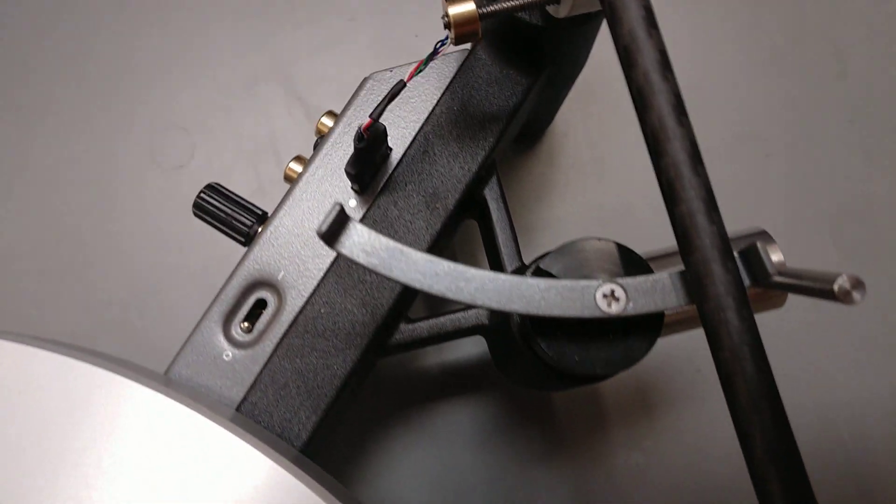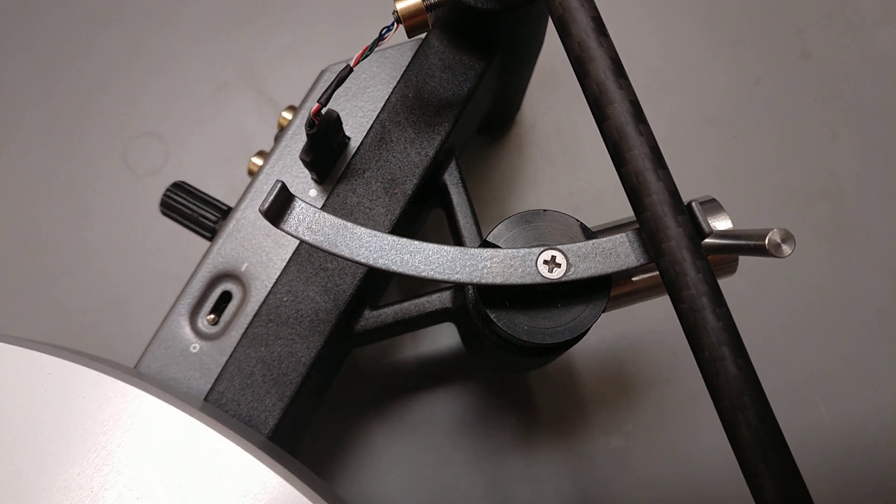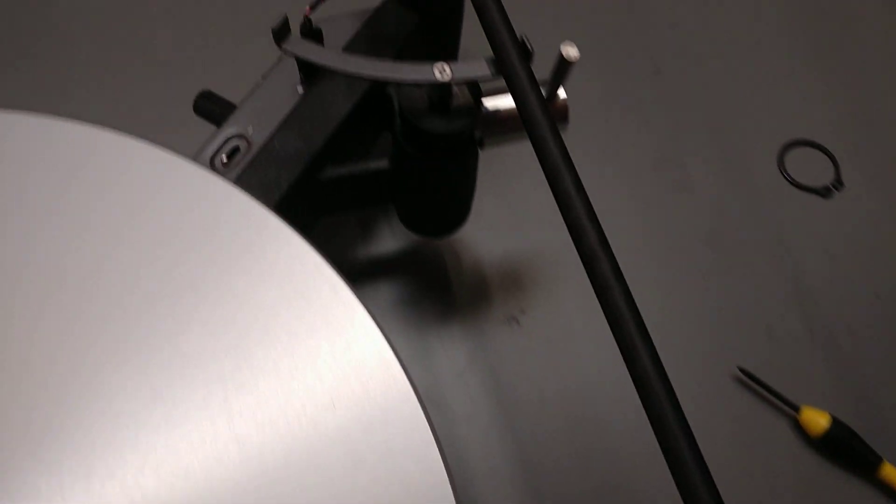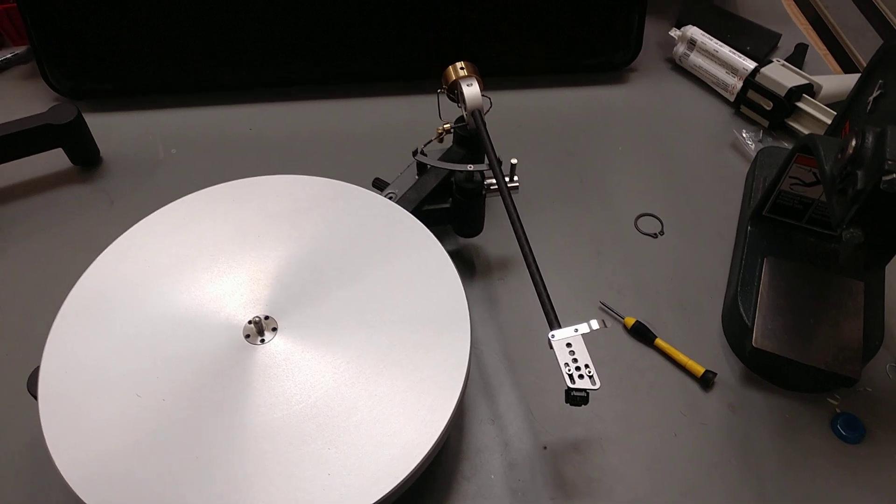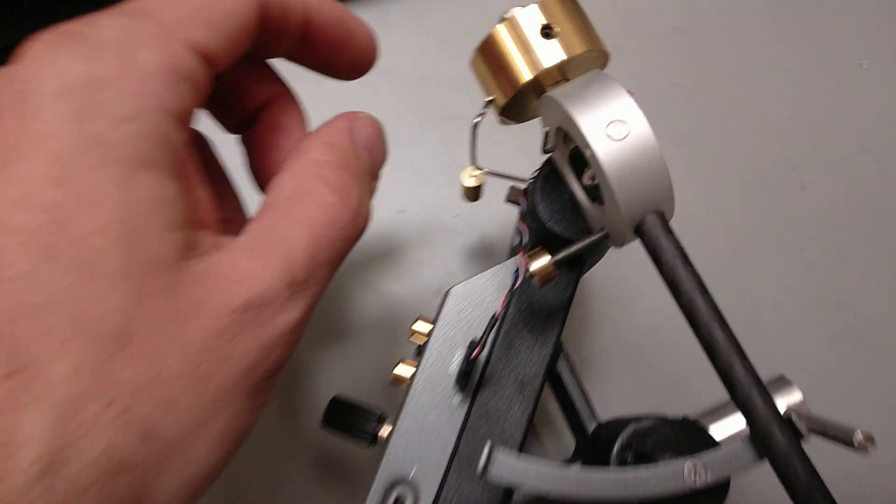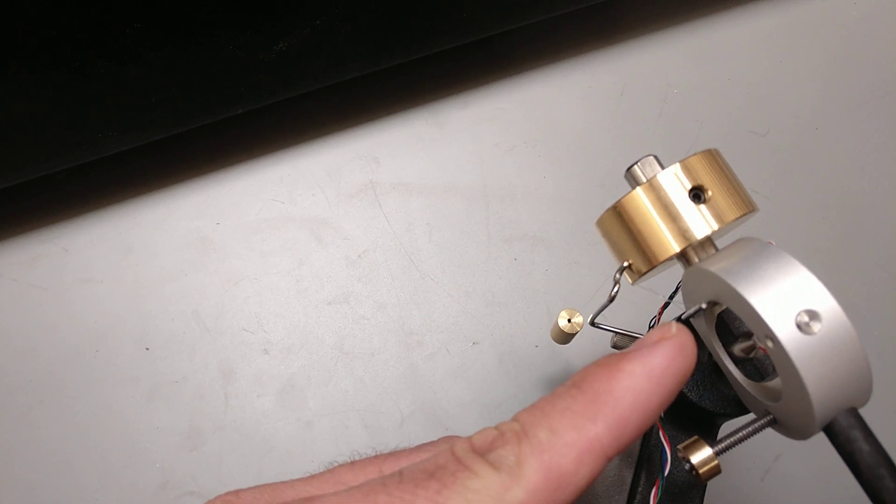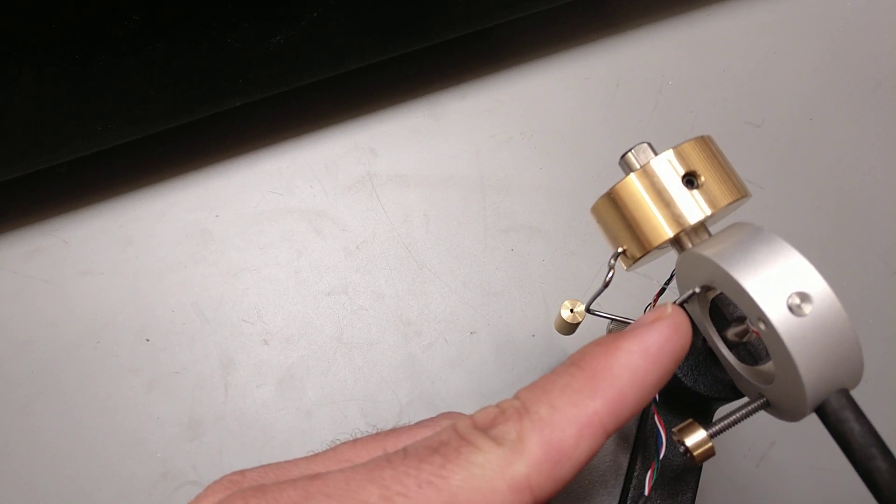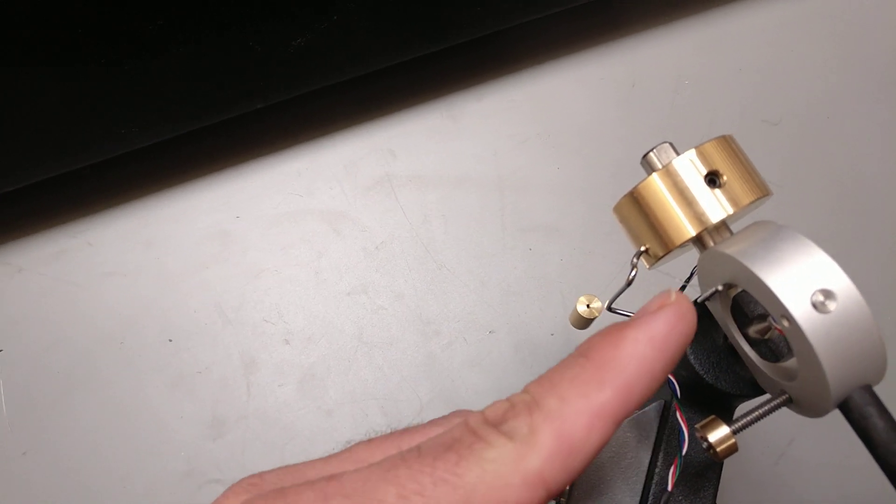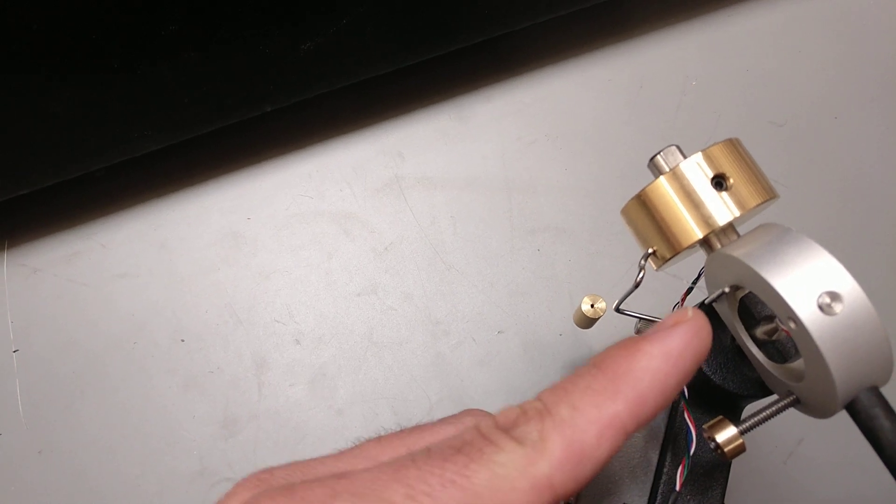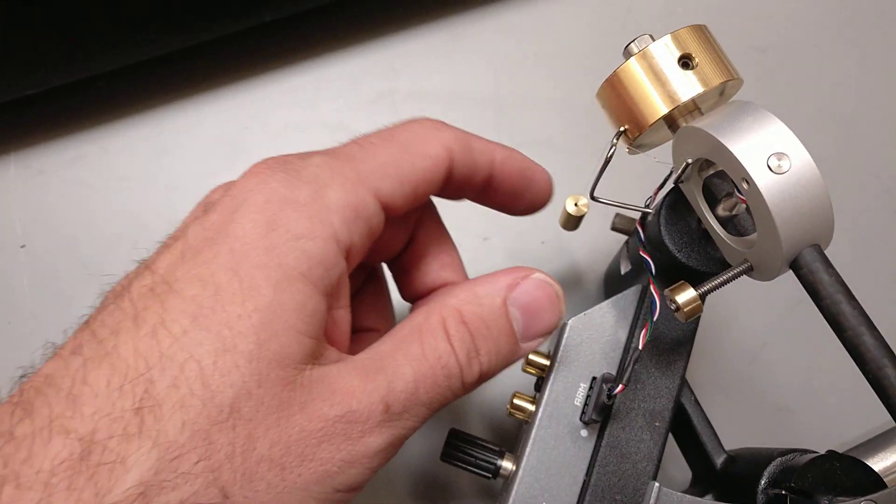So what I do is I want to put the arm all the way over to the off-record position here like so. What I want is for the monofilament to be coming off of the tone arm anti-skate rod at the 90-degree angle, so it's going to need to come here. Basically what we need to do is we need to bend this guy to do that.